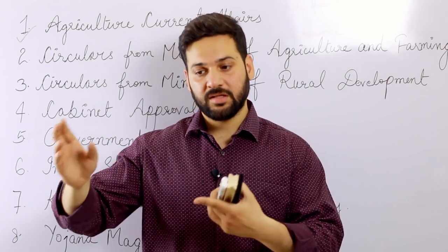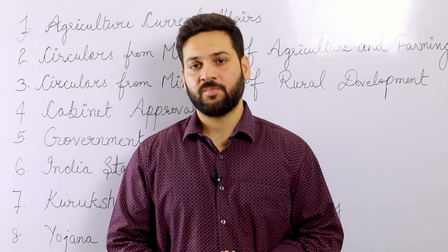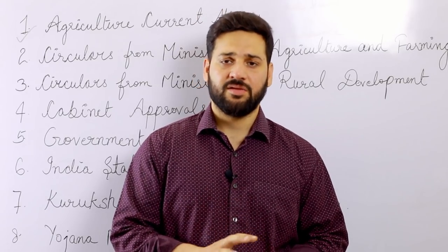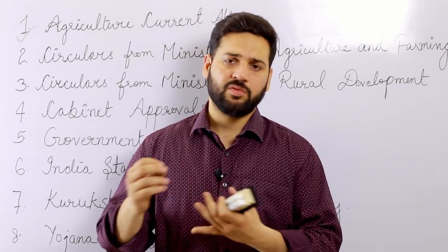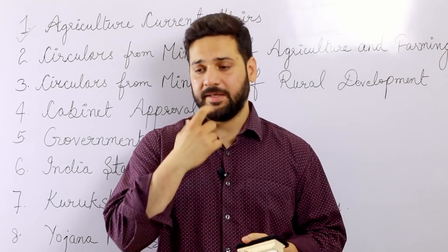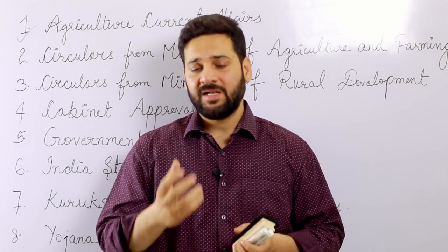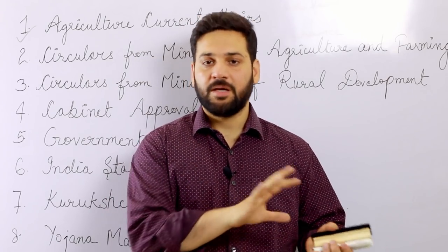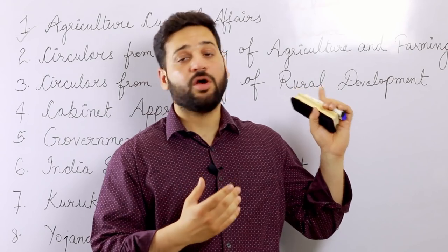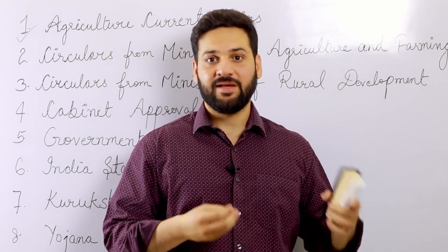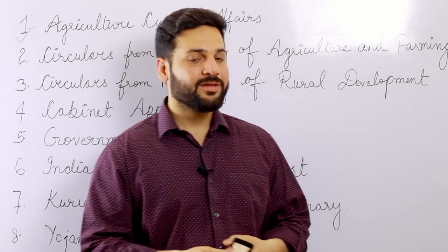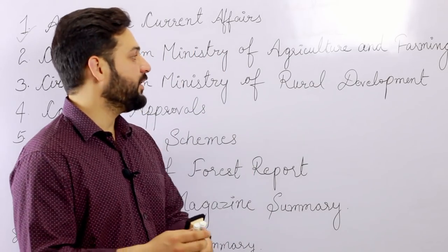There is an ESI and ARD section and a General Awareness section in RBI Grade B as well. Even in SEBI Grade A there is an ESI section. However, the ESI and ARD section — ARD is totally different — and the ESI section of NABARD Grade A is a little different from RBI Grade B, because the emphasis is on agricultural policies and agricultural schemes.